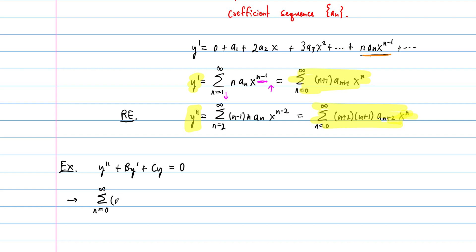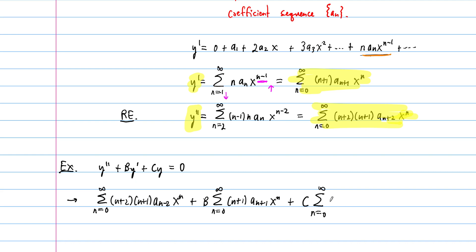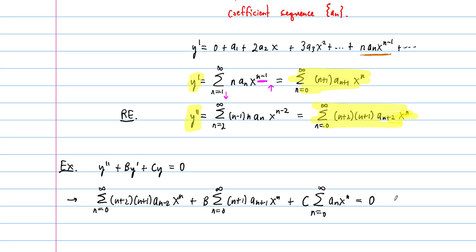This becomes: the sum from n equals 0 to infinity of (n+2)(n+1)·a sub n+2·xⁿ, plus B times the sum of (n+1)·a sub n+1·xⁿ, plus C times the sum of a sub n·xⁿ, all equal to 0. We notice all terms have the same power of x and all sums start at the same index. We want to combine everything into a single sum — to do that, the constants B and C need to go inside the sum by the distributive property.